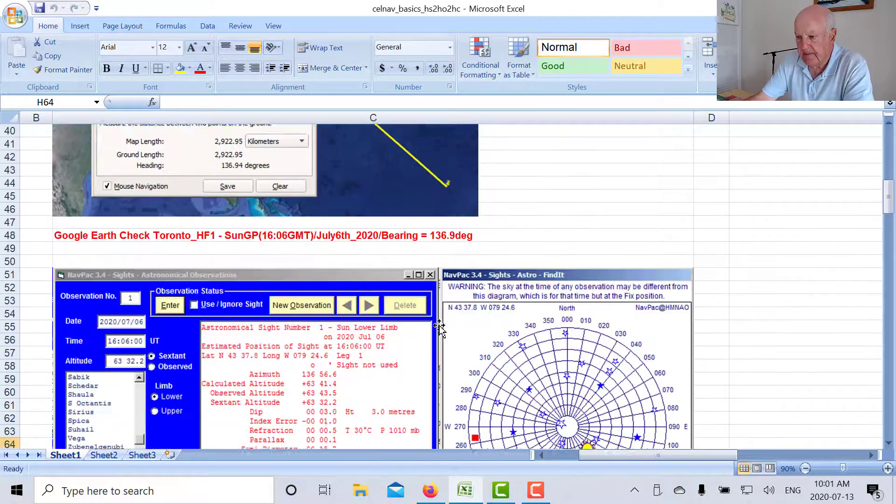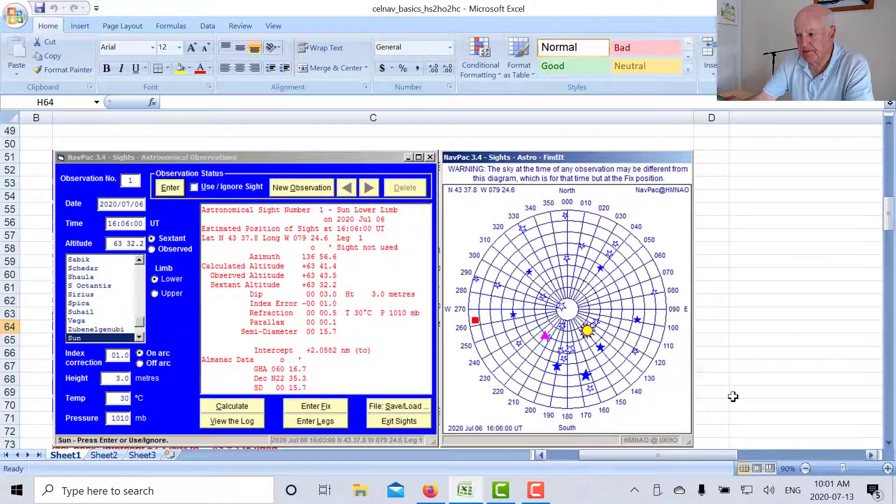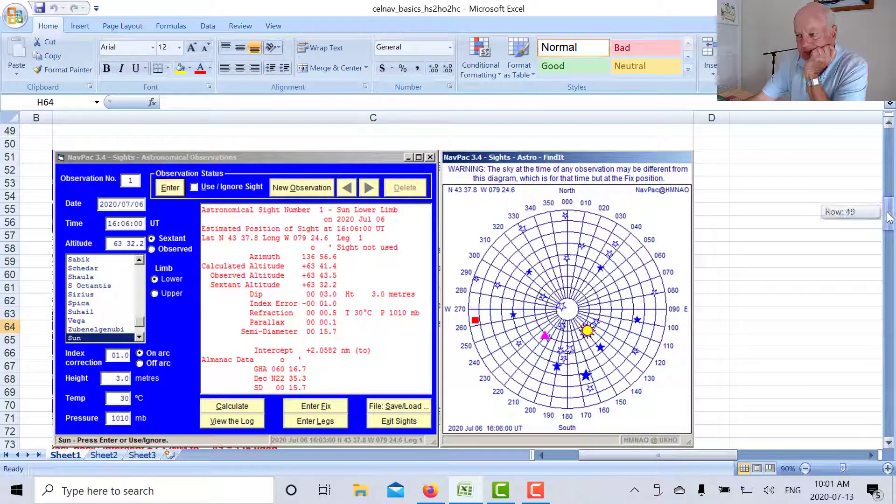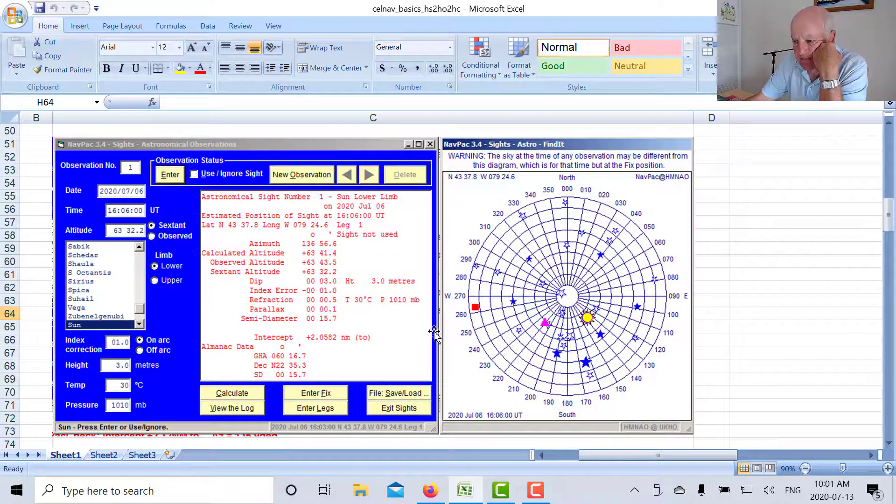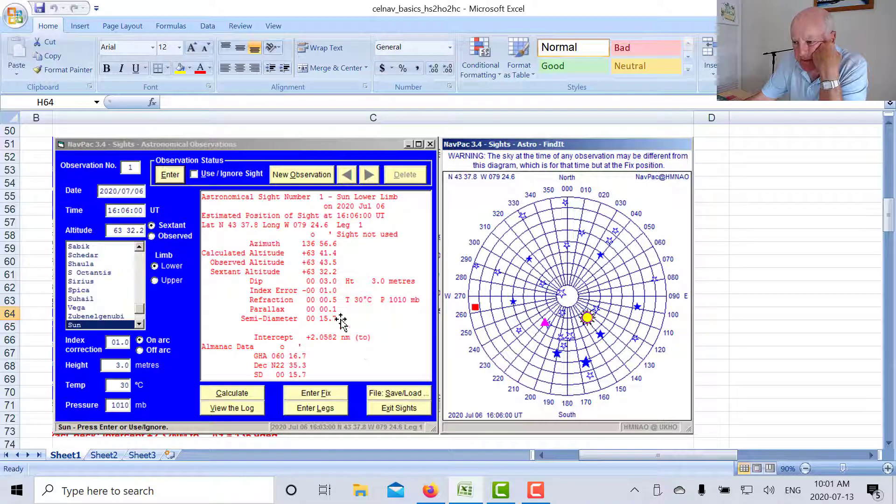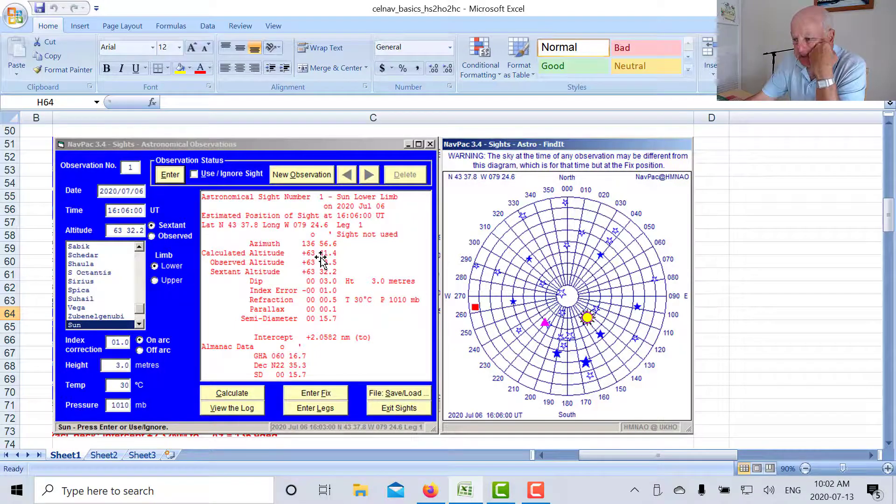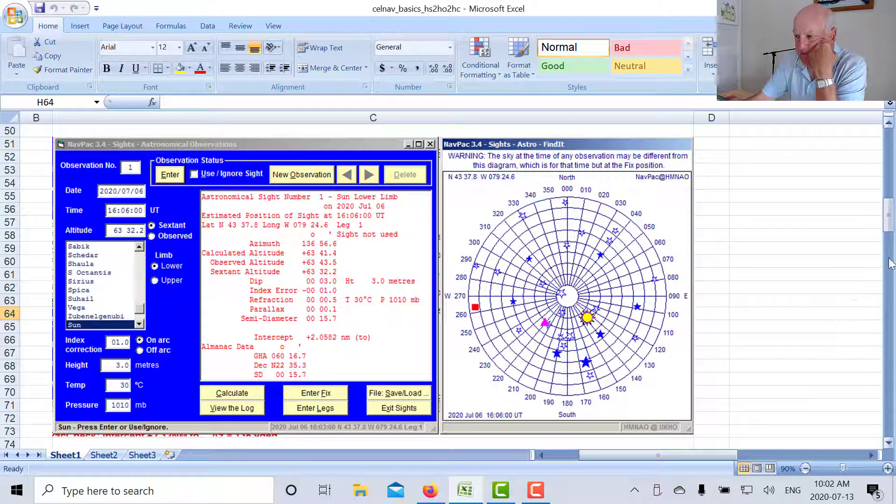And then down here what I've used is the Admiralty British Admiralty NAVPAC computer program to see what I get there. And I get the same thing: 136 degrees 56.6 minutes is 136.9 degrees same azimuth, and 63 degrees 41 minutes is the same calculated altitude as well. So I've checked my values a couple of ways just to make sure I get the right result.